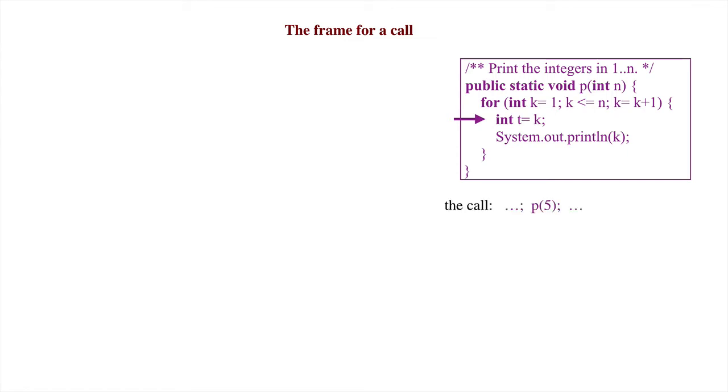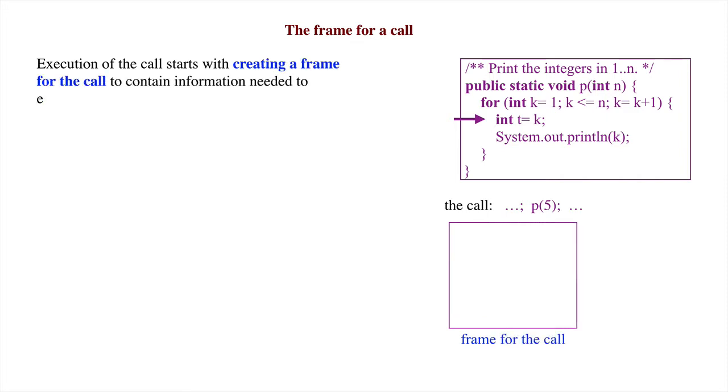Now consider the call p of 5. When this call is executed, a box is created, called the frame for the call. It contains all information needed to execute the call.